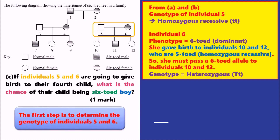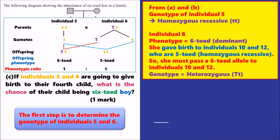Part C is the basic calculation question. If individuals 5 and 6 would like to give birth to a 4th child, what is the chance of having a 6-toed boy? There are two criteria: being 6-toed and being a boy. Individual 5's genotype is homozygous recessive (tt). Individuals 10 and 12 are also homozygous recessive, so they must have received a 5-toed allele from individual 6, meaning individual 6 must be heterozygous. Drawing the genetic diagram, the phenotypic ratio of 5-toed to 6-toed offspring is 1 to 1, giving a 50% chance of being 6-toed.